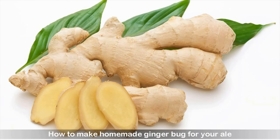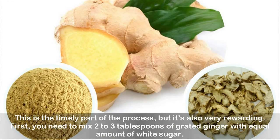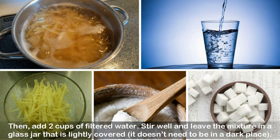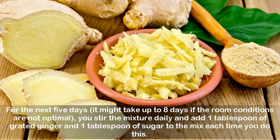How to make homemade ginger bug for your ale: this is the timely part of the process but it's very rewarding. First, mix 2 to 3 tablespoons of grated ginger with an equal amount of white sugar. Then add two cups of filtered water, stir well, and leave the mixture in a glass jar that is lightly covered — it doesn't need to be in a dark place. For the next five days (it might take up to eight days if conditions are not optimal), stir the mixture daily and add one tablespoon of grated ginger and one tablespoon of sugar each time.